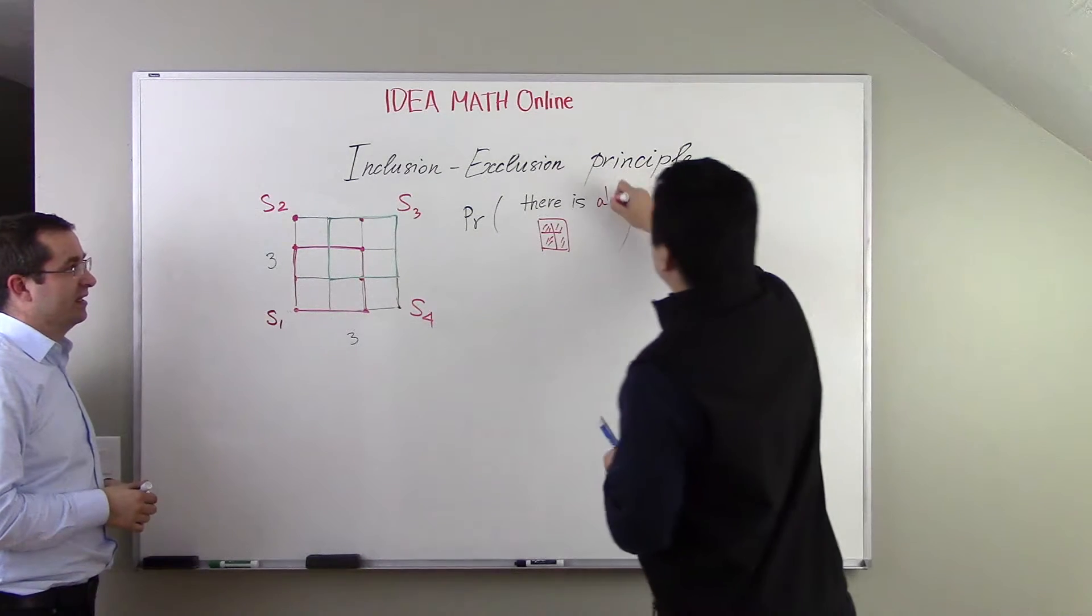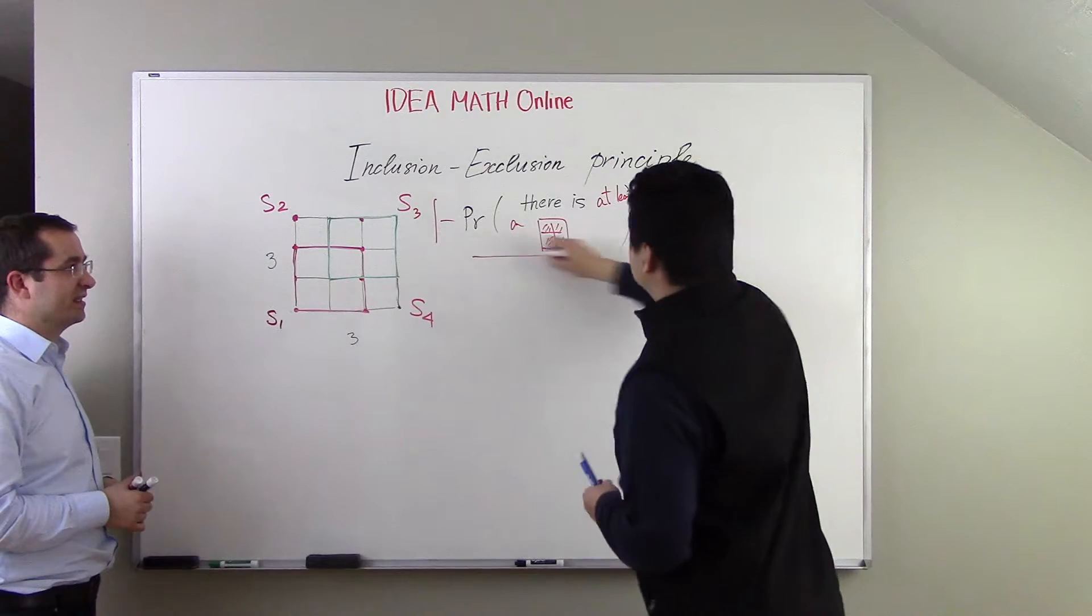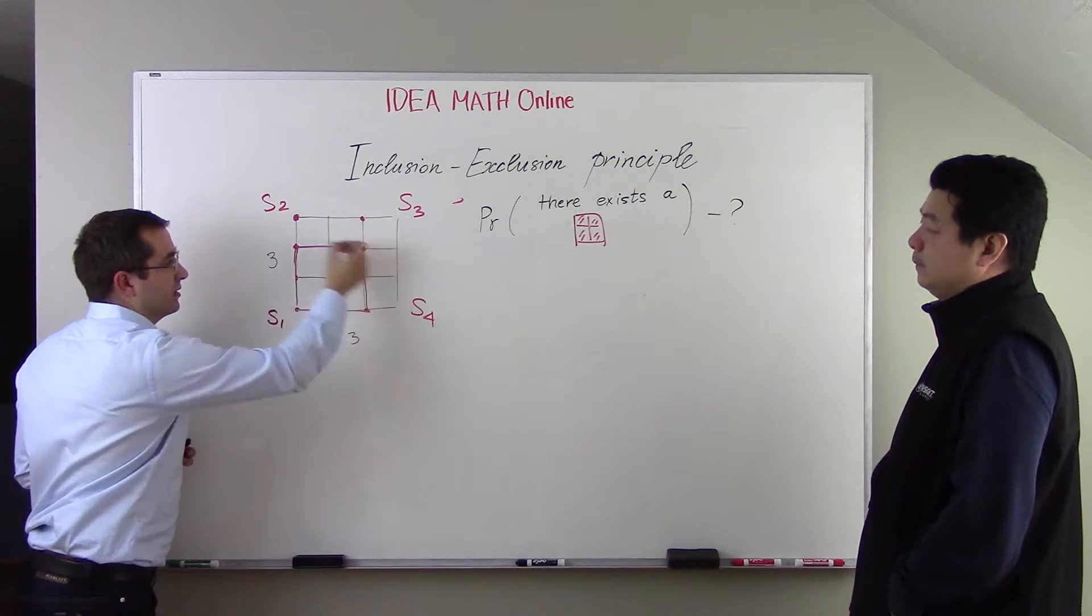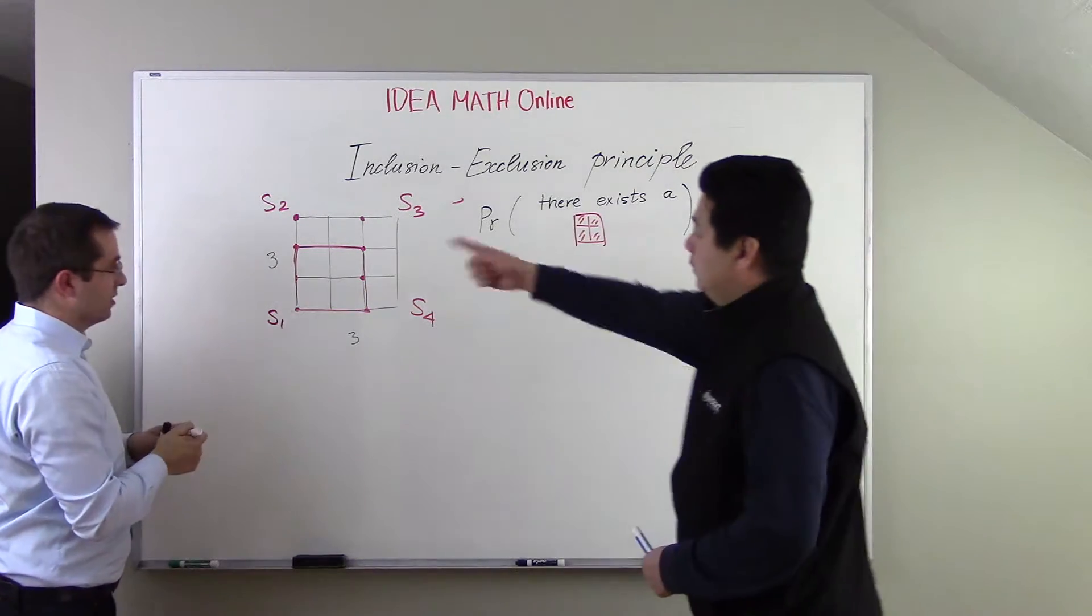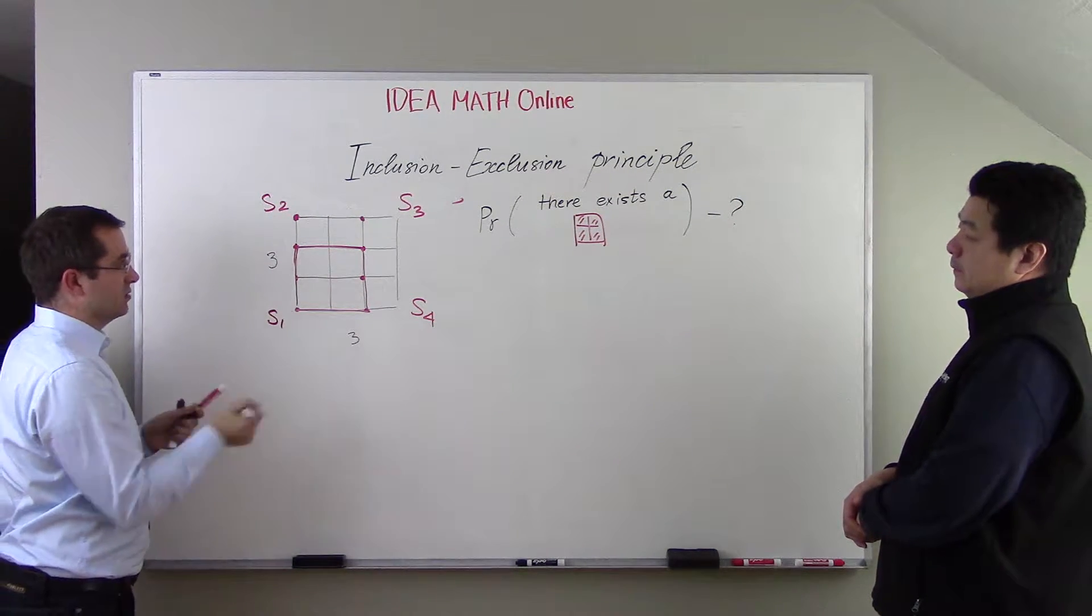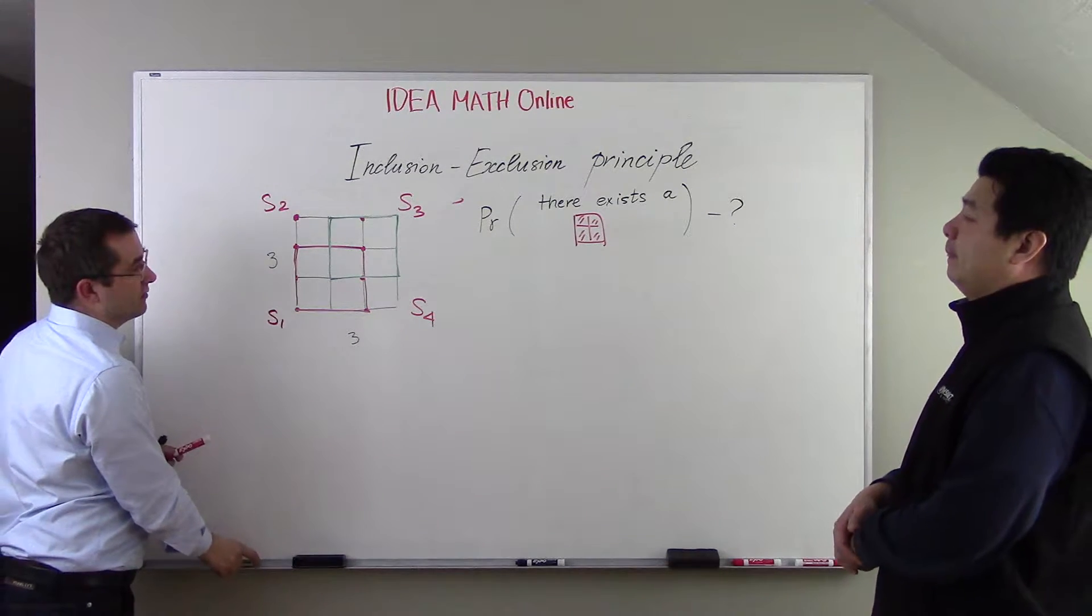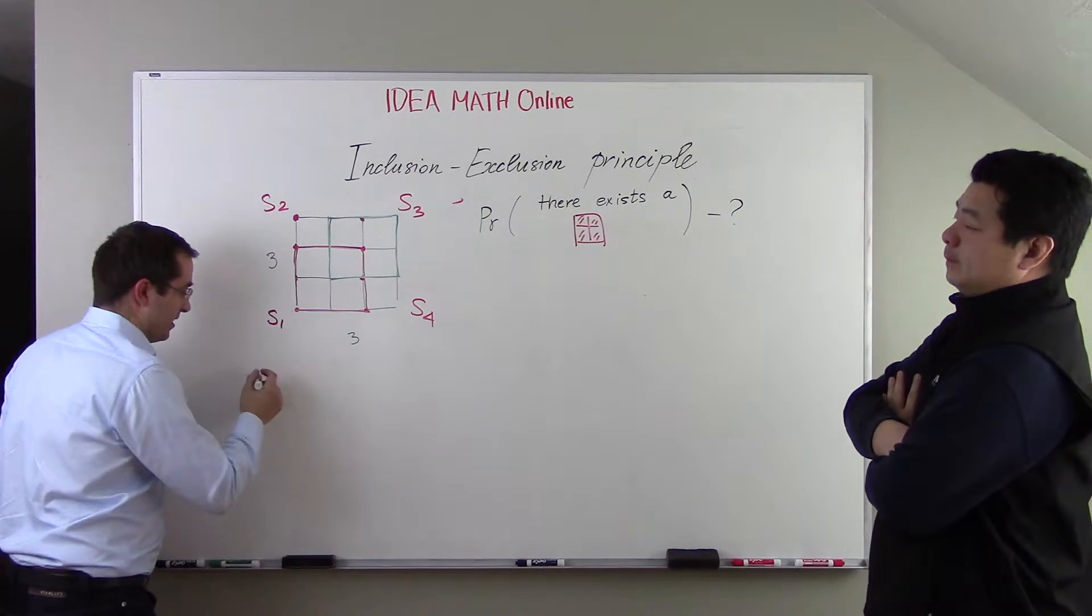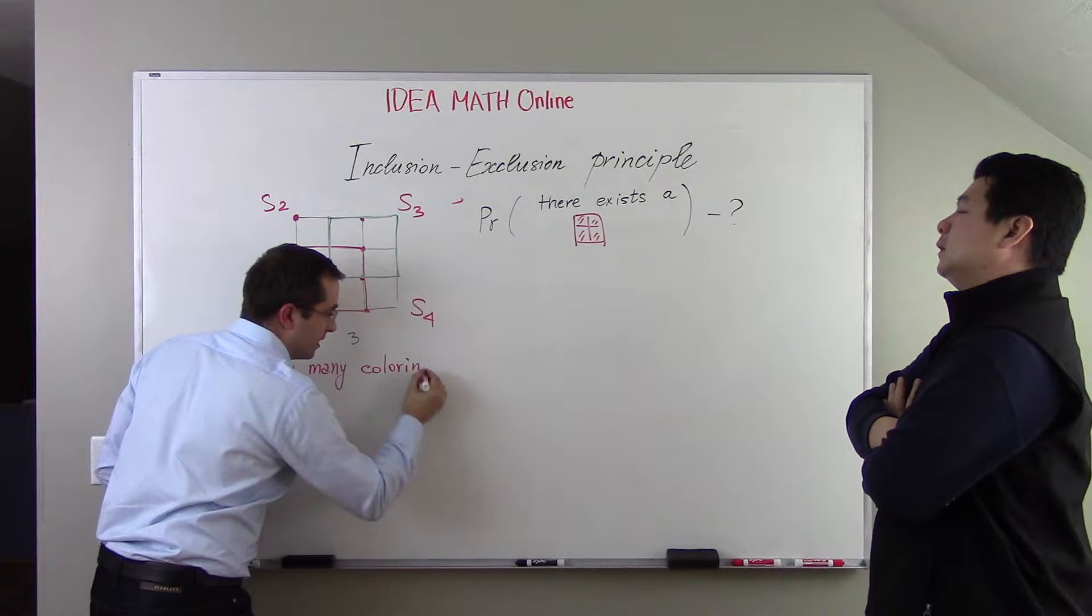We will find the probability that there is at least one red square. And the answer will be one minus that. And our task is to find this. We have four squares. One here that I depicted, one can be here, one can be here, and one can be here. Just draw a small circle around here, you have a square here. That's S1?